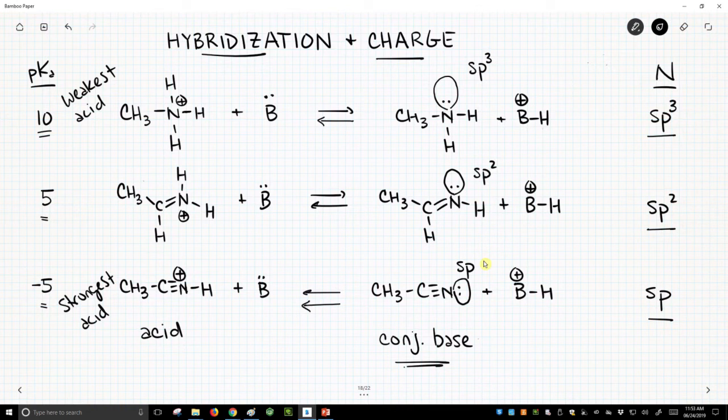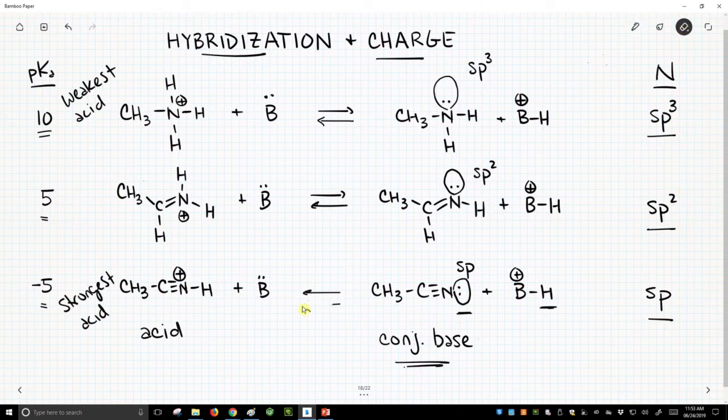People use this hybridization trend to explain the fact that the sp hybridized lone pair is not as extended. It's not as available to interact with the hydrogen. So therefore, this equilibrium arrow going backwards,